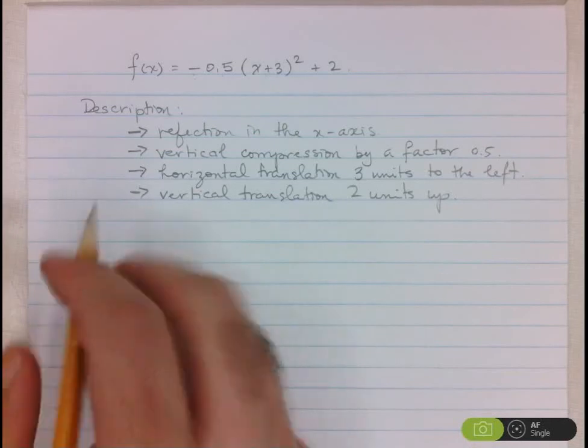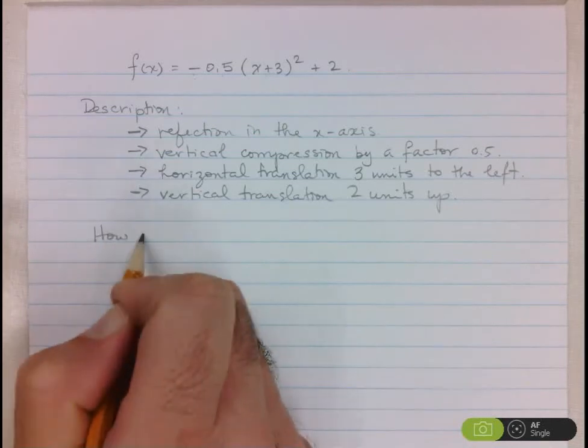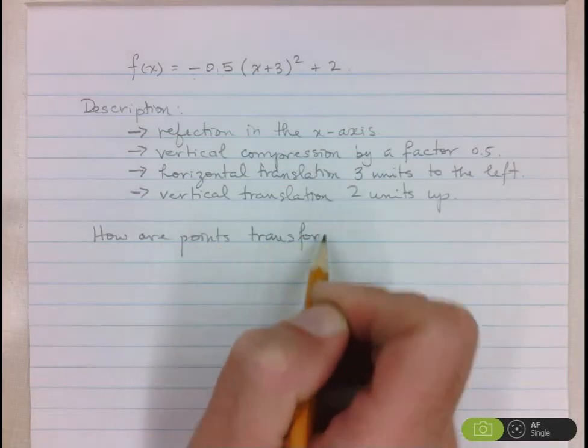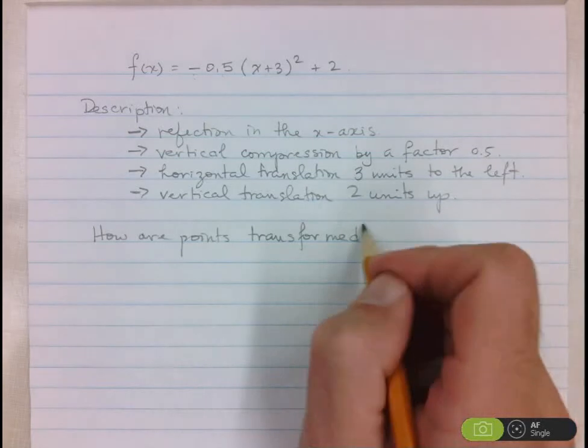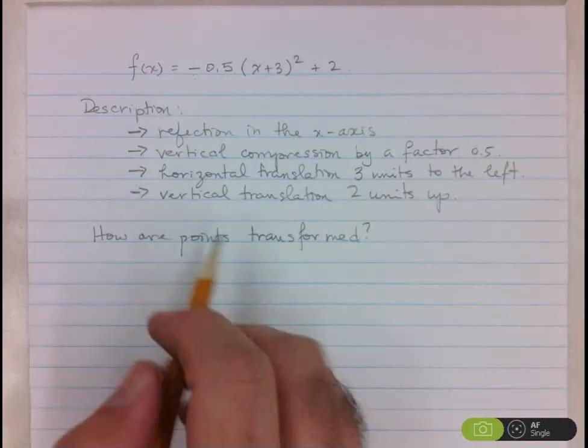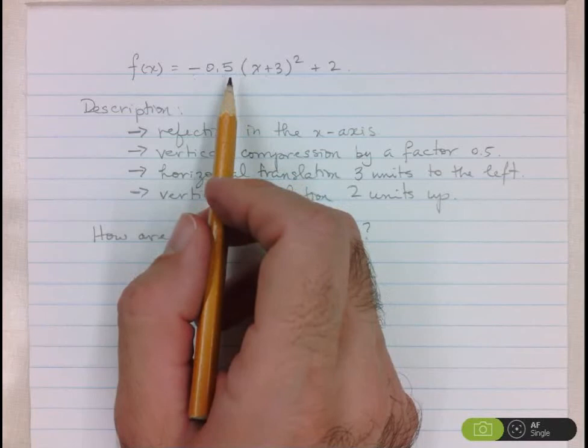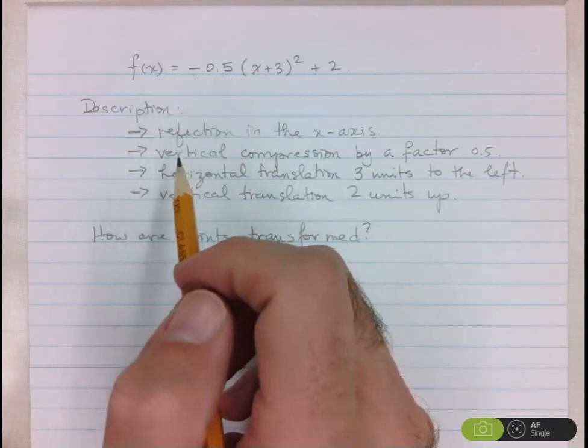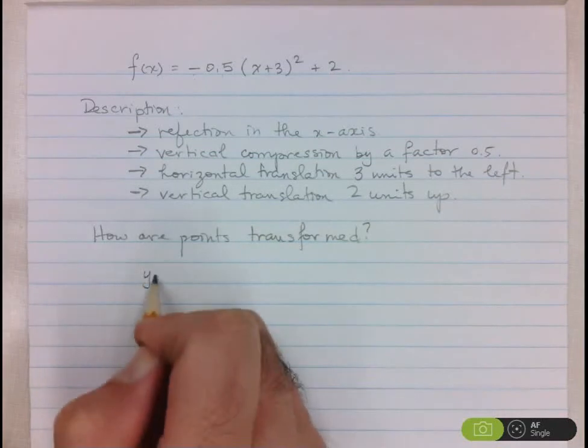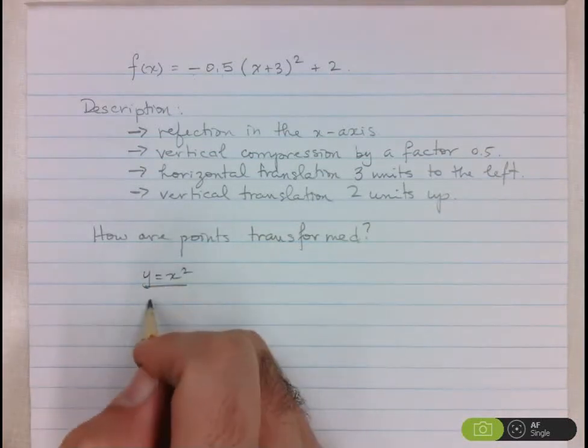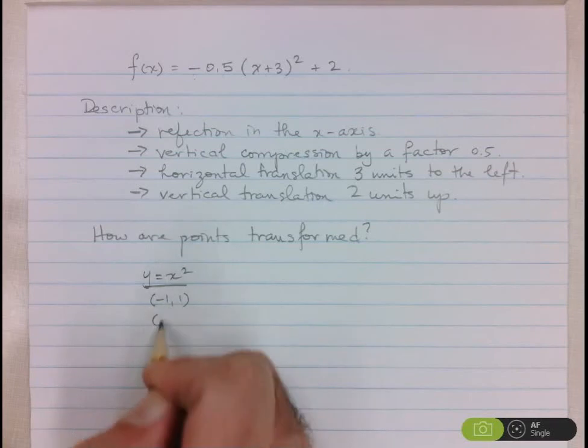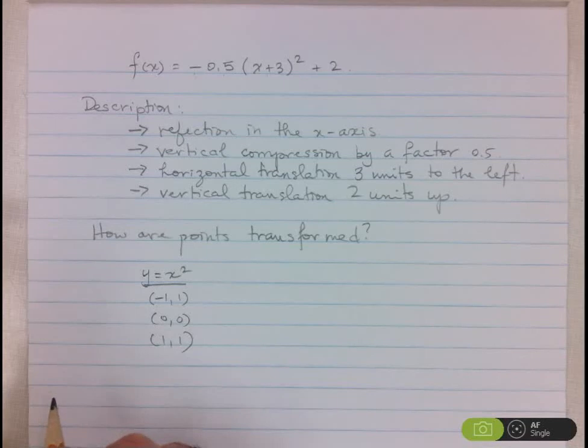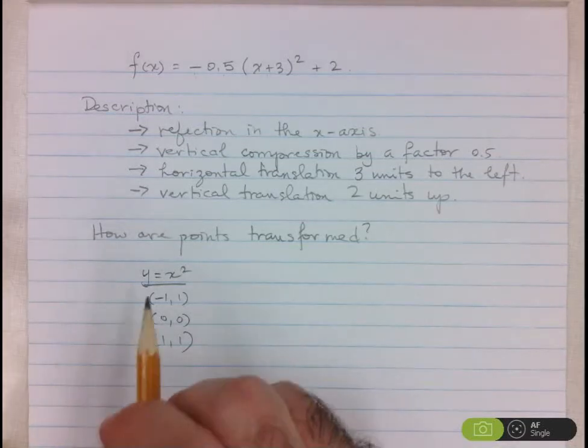Next thing I want to see is how are the points transformed? Now we can transform many points from y equals x squared to this new function. However, we've decided on using those three basic points that show the shape of the graph quite well. So you are always going to start with your points on y equals x squared, and the three we've chosen here are (-1, 1), (0, 0), and (1, 1). Now when doing the transformations, remember you have to take care of the multiplication ones first.